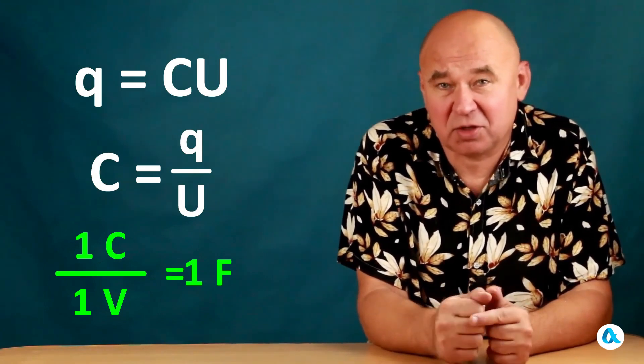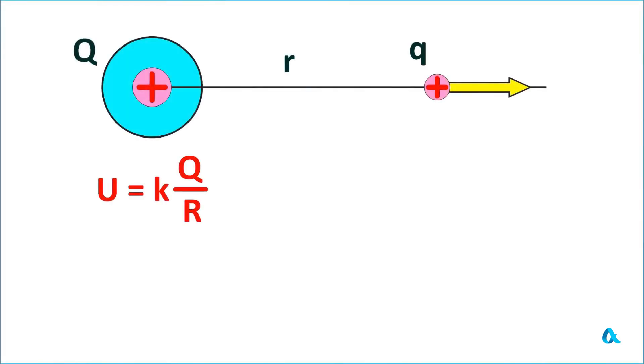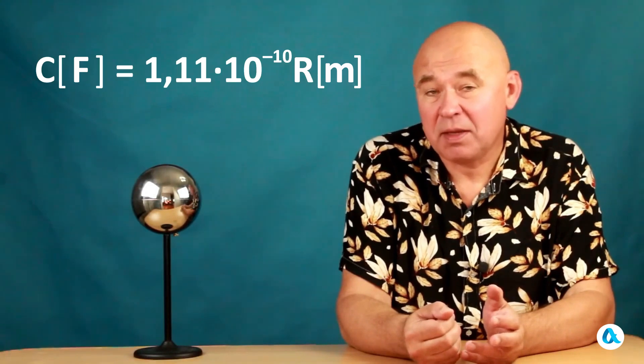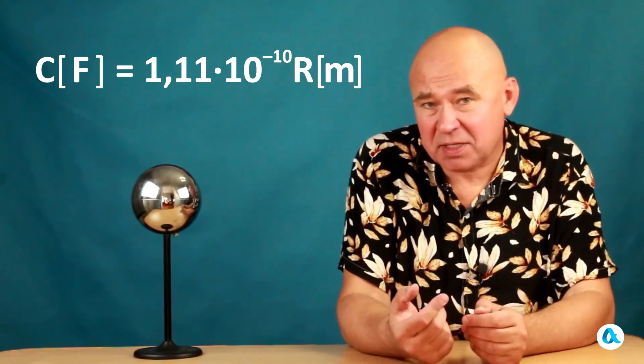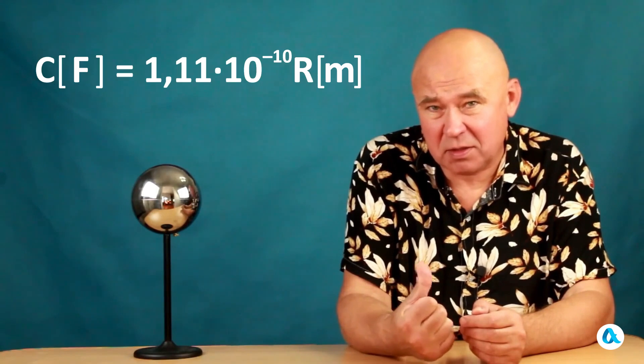Now we return to our formula for the potential of a charged sphere. From this, we find the capacitance of the sphere. We need to divide the charge by the potential, and we get the radius of the sphere r divided by the coefficient k. So the capacitance is proportional to the radius of the sphere. In the advanced version, instead of 1/k, we write 4πε₀r. This is the formula for the capacitance of a sphere. Perhaps I will rewrite this formula in the following form: the capacitance of the sphere expressed in farads is equal to 1.11 × 10⁻¹⁰ multiplied by the radius of this sphere in meters.